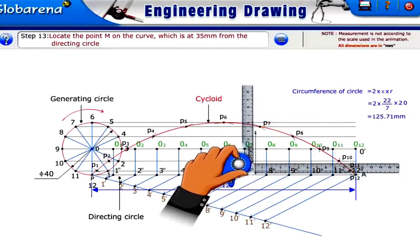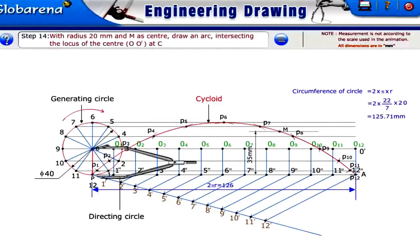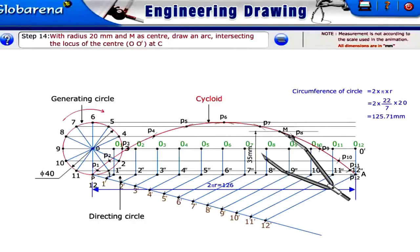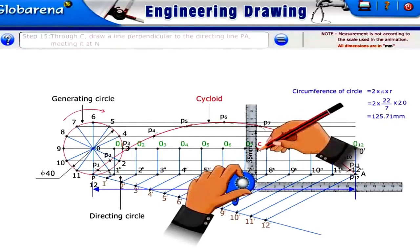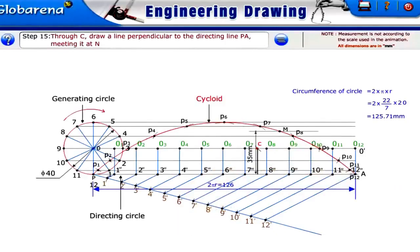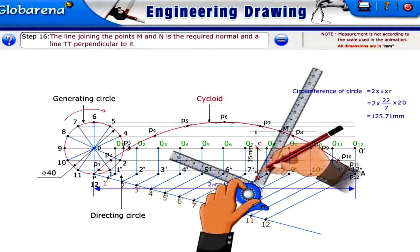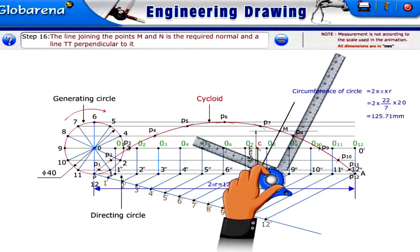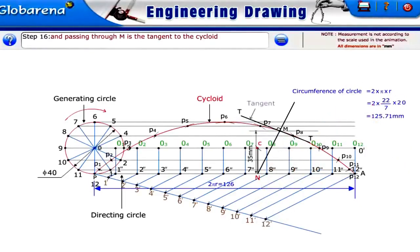Locate the point M on the curve which is at 35 mm from the directing line. With radius 20 mm and M as center, draw an arc intersecting the locus of the center OO' at C. Through C, draw a line perpendicular to the directing line PA meeting it at N, the point of contact of the generating circle when its center moves to C. The line joining points M and N is the required normal, and a line TT perpendicular to it and passing through M is the tangent to the cycloid.